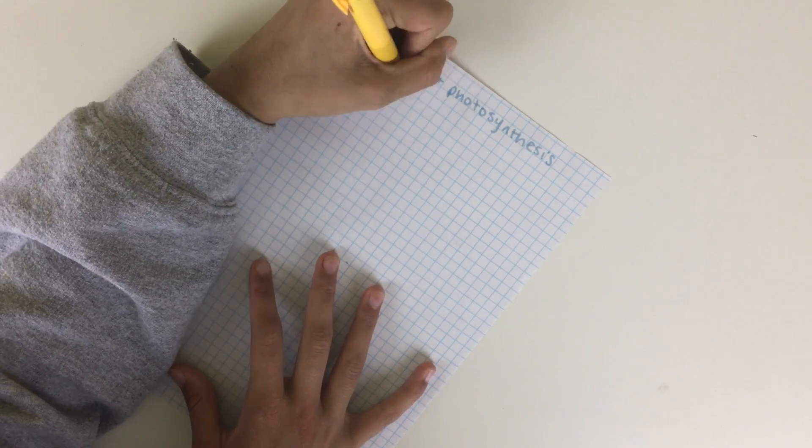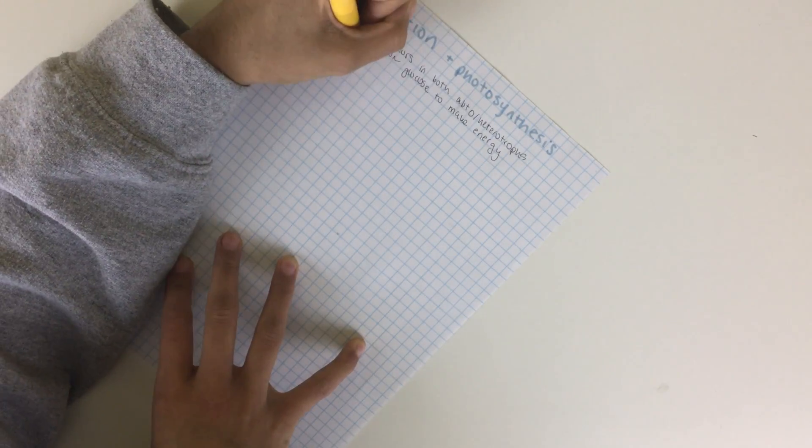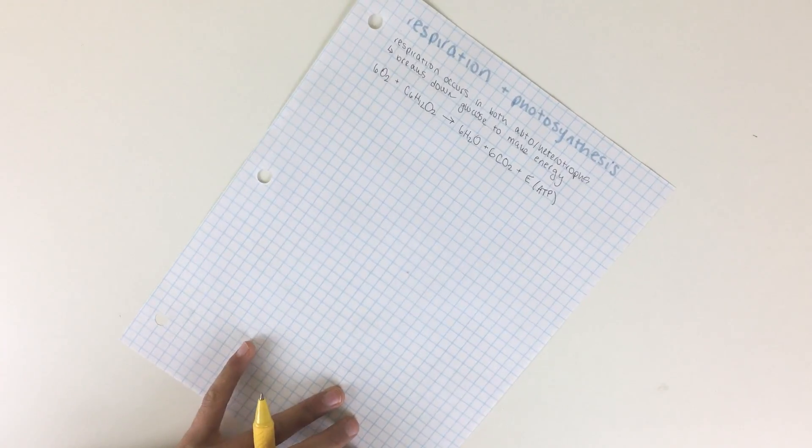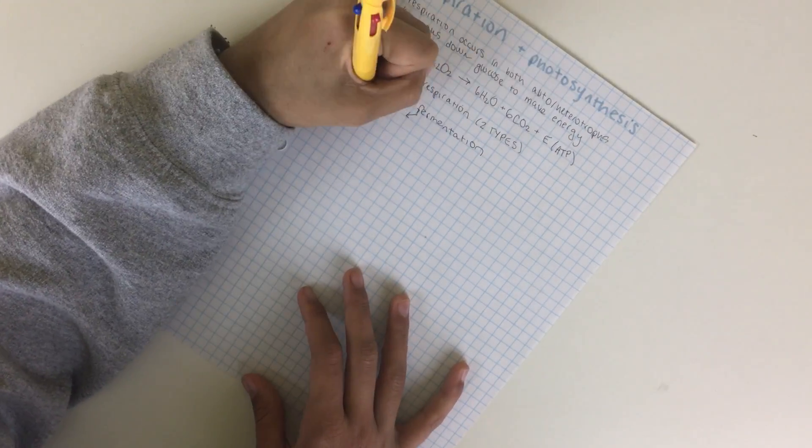Hey guys! So I'm currently studying for an AP Biology test and I thought I would show you guys my entire process for studying for one topic. In this case I'm looking through cellular respiration.